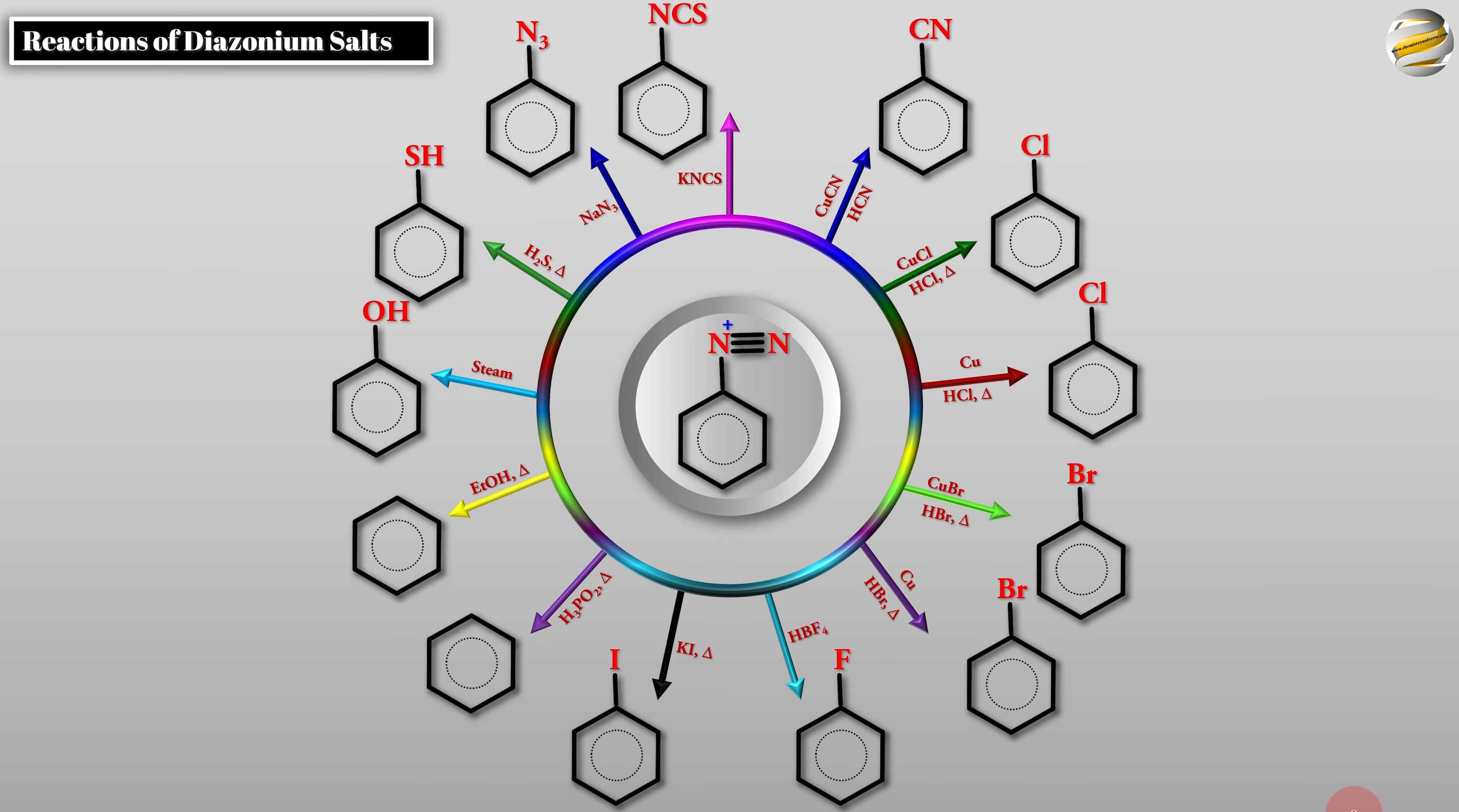Whenever you use Cu something and HCN, it's called Sandmeyer reaction. If you use only copper, it's called Gatterman reaction. CuBr with HBr, Sandmeyer reaction. Only copper, Gatterman reaction. The fluoro one is called the Balz-Schiemann reaction.